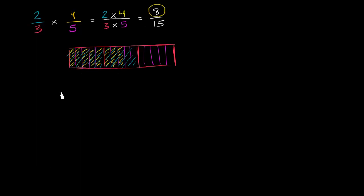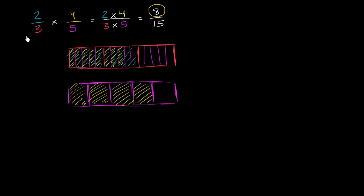You could have thought about it the other way around. You could have started with fifths. So let me draw a whole. Let me cut it into 5 equal pieces: 1, 2, 3, 4, 5. We're going to shade in 4 fifths—4 of the 5 equal pieces. And now we want to take 2 thirds of that. Well, how can we do that? Let's split each of these fifths into 3 pieces.